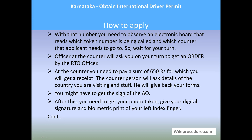With the token number in hand, observe the electronic board for your turn. When your number is called, go to the respective counter. The officer will direct you to get an order from the RTO officer. At the counter, you need to pay 650 rupees and will receive a receipt. The counter person will ask for details of the country you are visiting. Do not lose the receipt, as it is crucial for tracking the status.